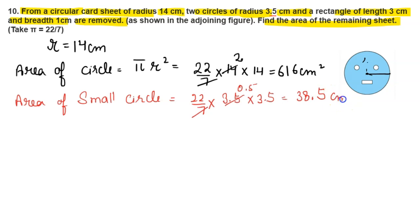This is the area of one circle. We need the area of two small circles, so it will be 38.5 × 2 = 77 cm².